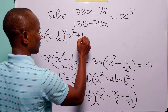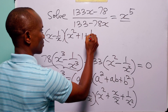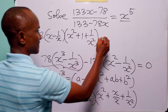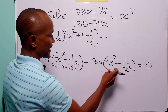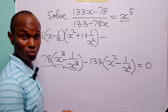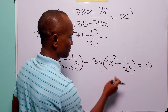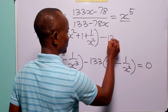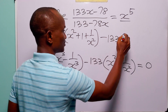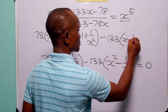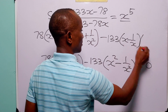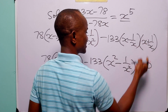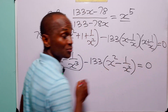This term becomes 78 into x minus 1 over x, multiplied by x squared plus 1 plus 1 over x squared. For the difference of 2 squares, x squared minus 1 over x squared factorizes into x minus 1 over x multiplied by x plus 1 over x. And of course this is equal to 0.